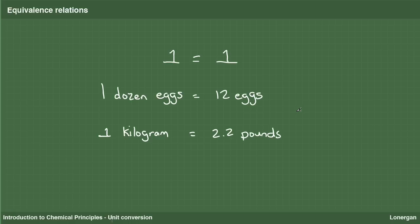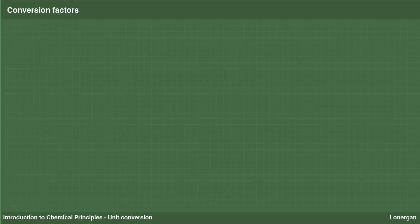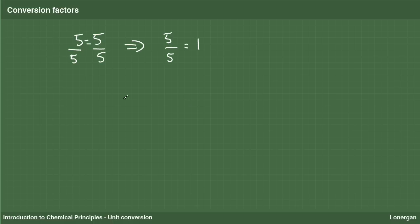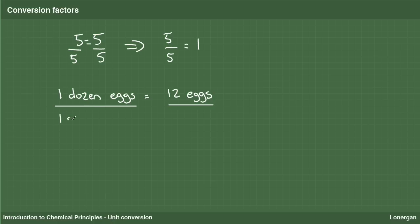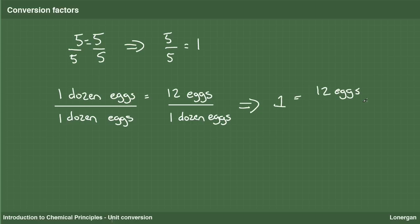Equivalence relations give rise to conversion factors, which as we will see simply equal 1. Consider for example the simple equality 5 equals 5. If we divide both sides by 5, which preserves the equality, we can readily see that 5 over 5 equals 1. Let's now do a similar manipulation with the equivalence relation 1 dozen eggs equals 12 eggs. Dividing both sides by 1 dozen eggs yields the conversion factor 12 eggs over 1 dozen, and from the algebra we can see that this conversion factor equals 1. Dividing any quantity by itself gives 1.